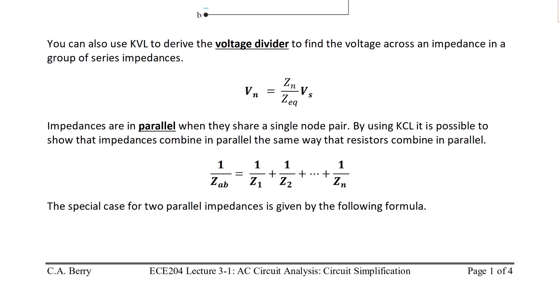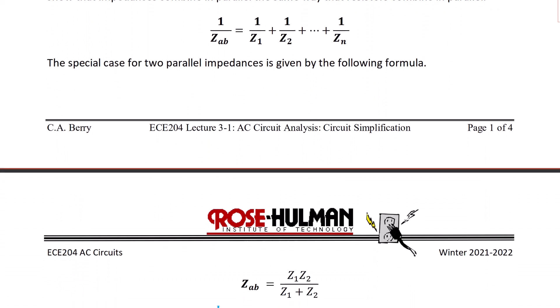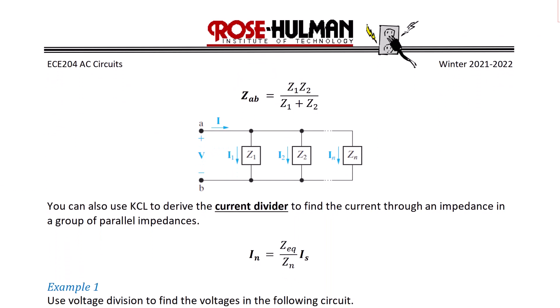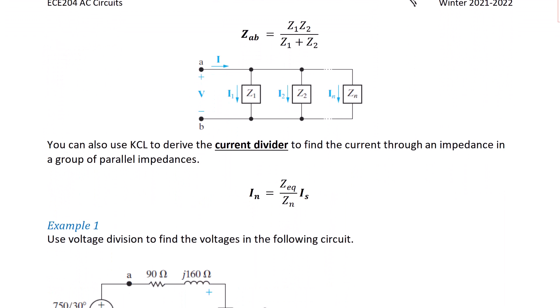Based upon KCL, impedances in parallel combine like resistors in parallel when they share a single node pair. The equivalent impedance of parallel impedances is given by 1 over ZAB equals 1 over Z1 plus 1 over Z2 and so on. There is also a special case for two parallel impedances: ZAB equals Z1 times Z2 over Z1 plus Z2. There is also a current divider, so that the current through impedance ZN equals the equivalent impedance over ZN times the source current.